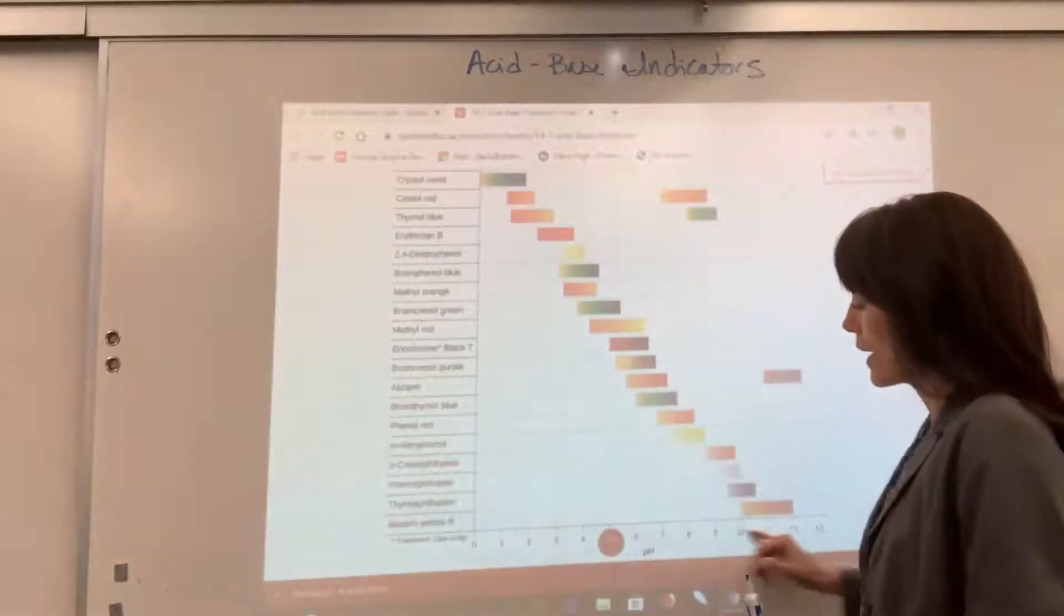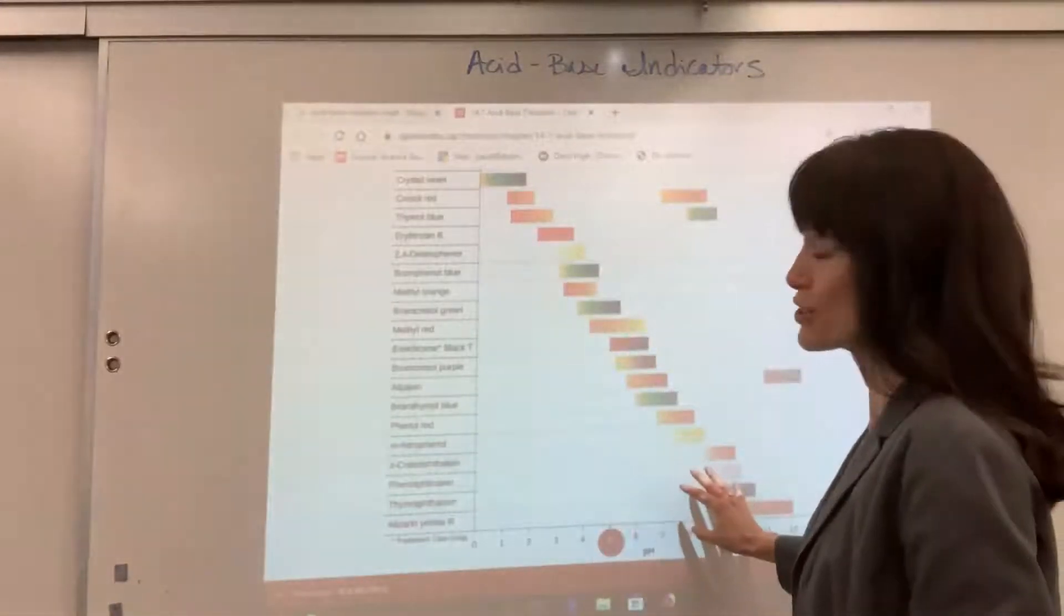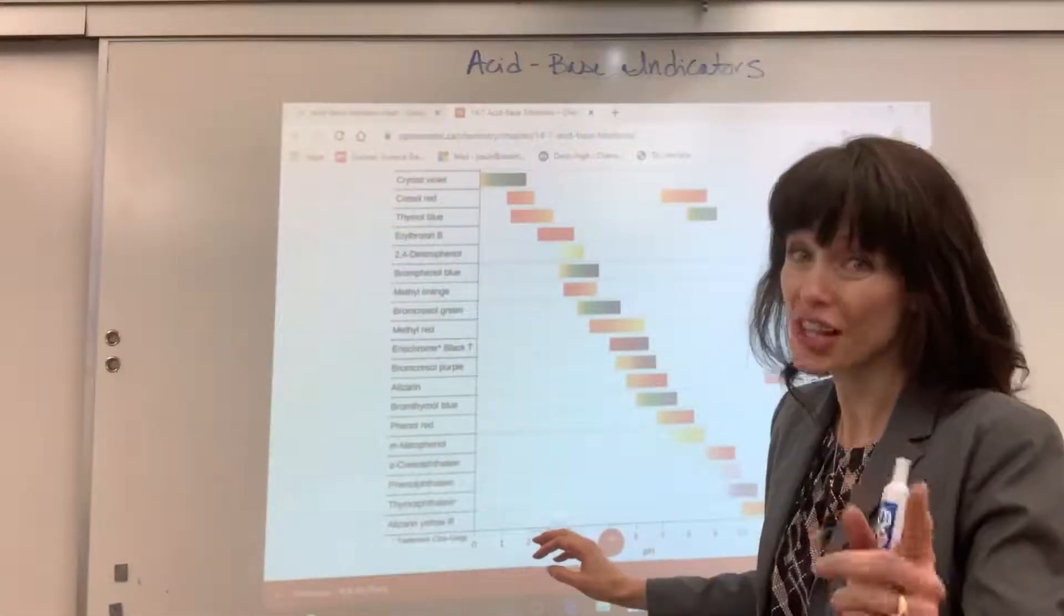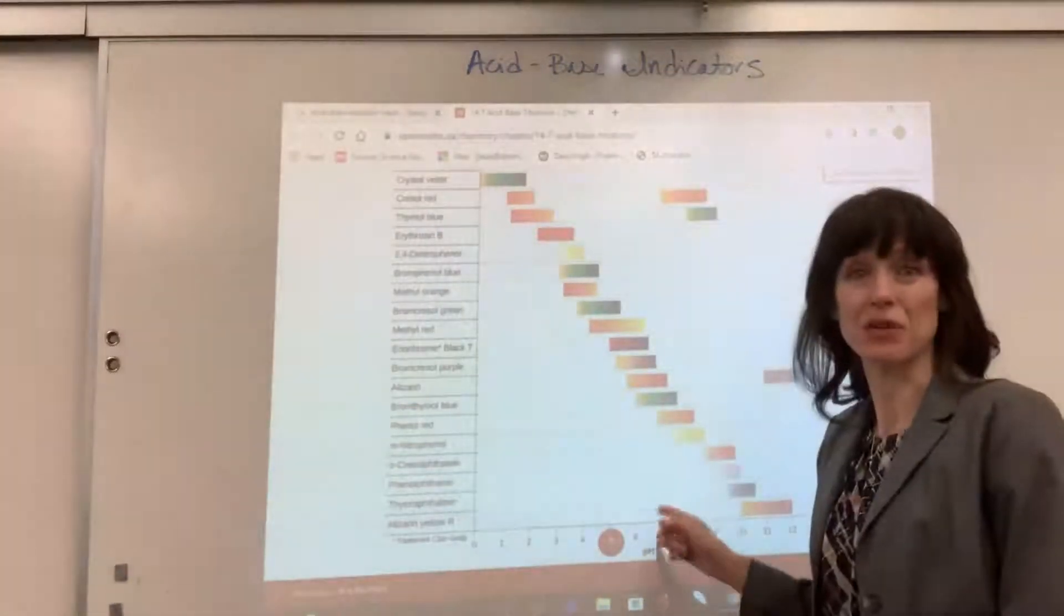Check out our x-axis here, it gives pH, and then when you follow this up, you get the color change, keyword there, change, color change for these different indicators at a particular pH.